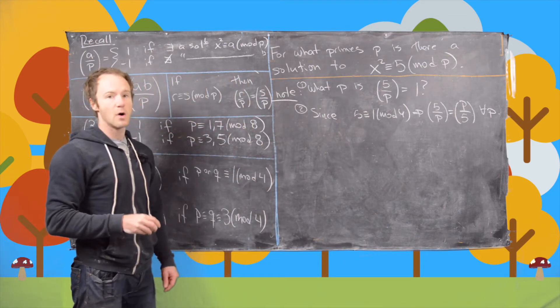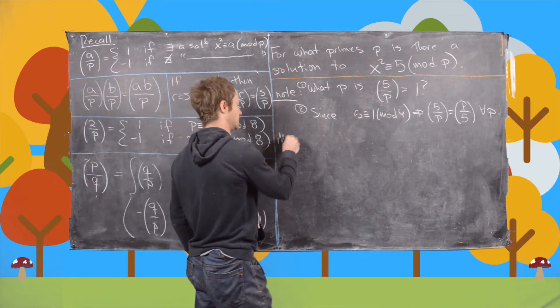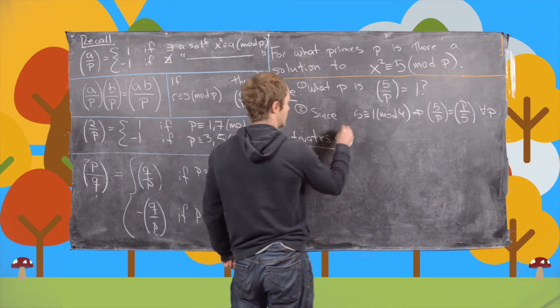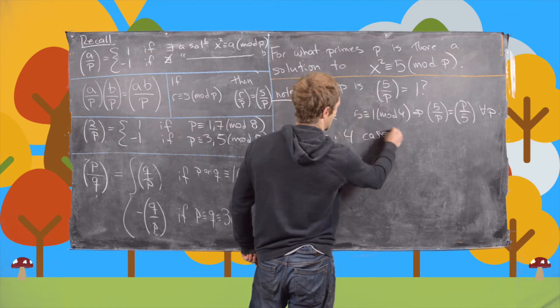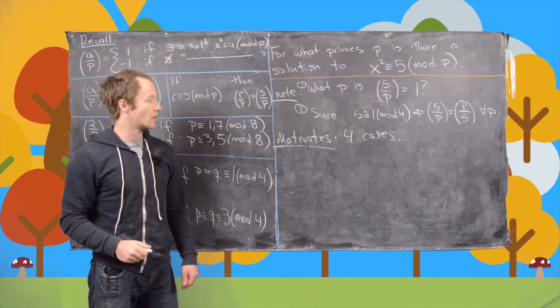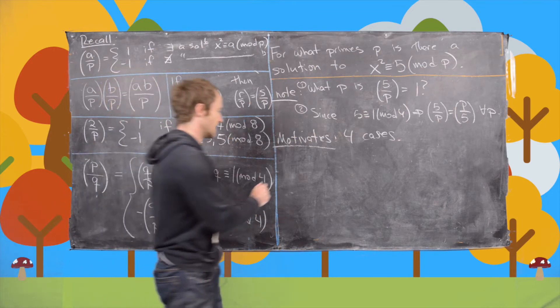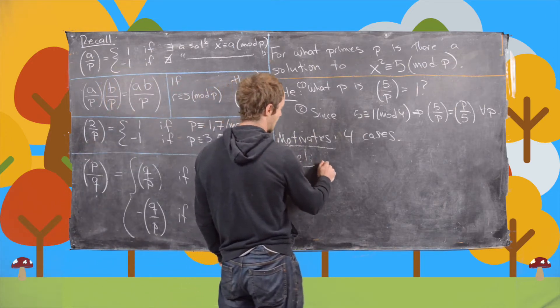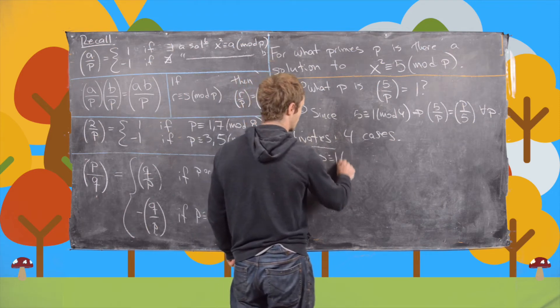And now that motivates four cases. And those cases are all of the residues modulo 5. And so we'll do these one case at a time. So case number one, we'll look at if p is congruent to 1 mod 5.